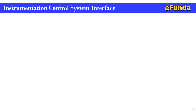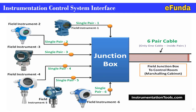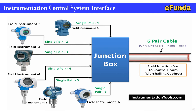For instrumentation control system interface, a figure from instrumentationtools.com shows various field instruments connected to junction boxes and further connected to the control room. Field instruments 1 through 6 each have a single pair cable connected, and in the junction boxes all cables are consolidated — six pairs in one cable — connected to the control room so as to carry the signal of each of the six field instruments to the control room for further control room engineering.